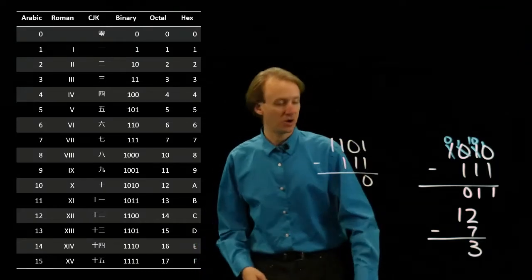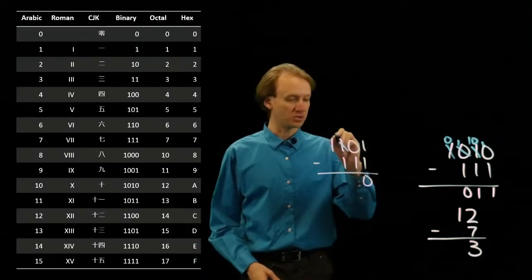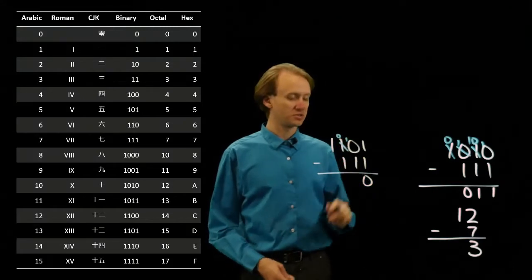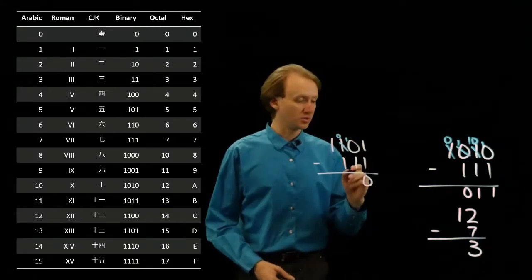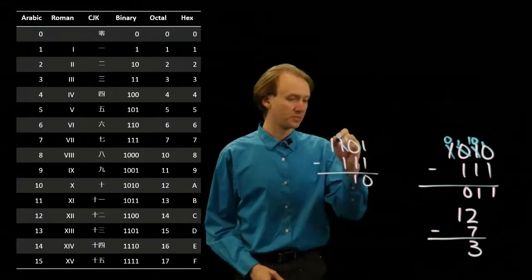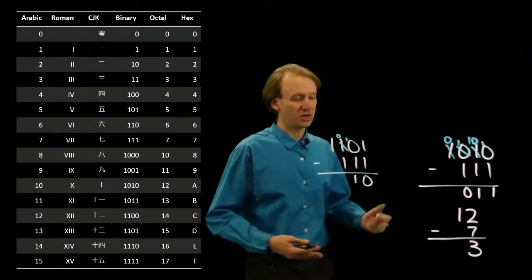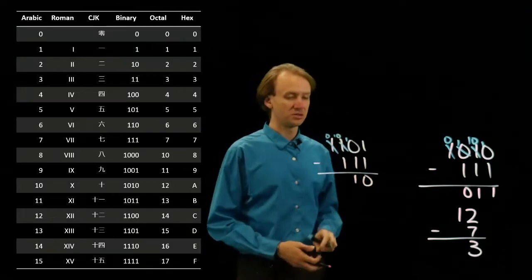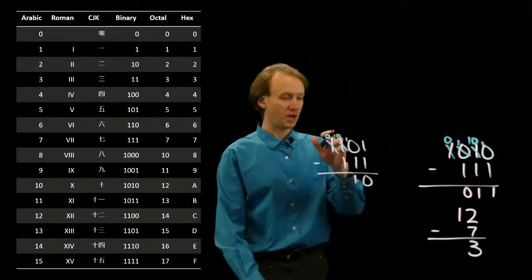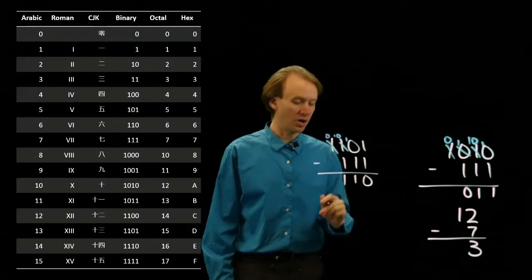So, 0 minus 1, well, I'll need to go borrow something again. So, I borrow something from the next position over. Now I've got 10 minus 1, which leaves me with 1. Now I've got a 0 minus 1 again. So, I will borrow something from this position. Now I've got a 10 minus 1, which leaves me with 1.